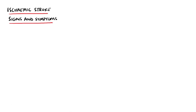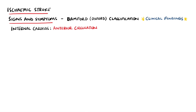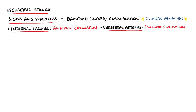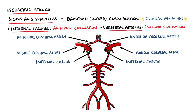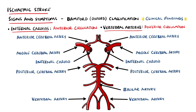The signs and symptoms and their severity will vary based on the region of the brain involved, as well as the size of the affected region and for how long it is ischemic. The Bamford or Oxford classification classifies stroke based on clinical findings and gives an idea of the brain territory affected. Generally, the anterior circulation is provided by the internal carotid arteries and their branches, while the posterior circulation arises mostly from the vertebral arteries. The main arteries from the internal carotids are the middle cerebral artery and the anterior cerebral artery, while the vertebral arteries join to form the basilar artery, from which comes the posterior cerebral artery.